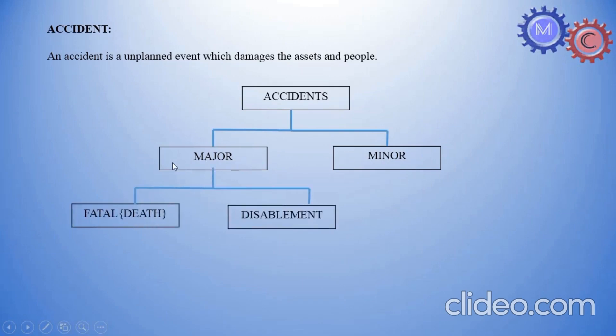Major. Fatal, death. If it is not, disablement. Disablement again split into two: temporary disablement, permanent disablement. Temporary, one case fracture for example. If we add two months, it is cured. That is temporary. Permanent, cut out, is permanent disablement.